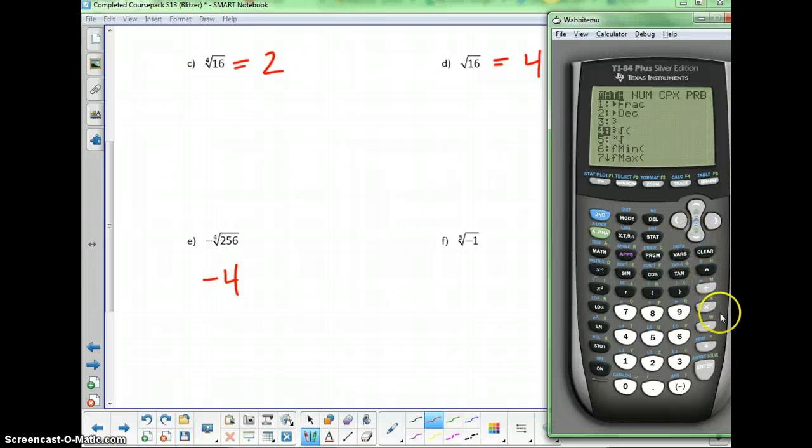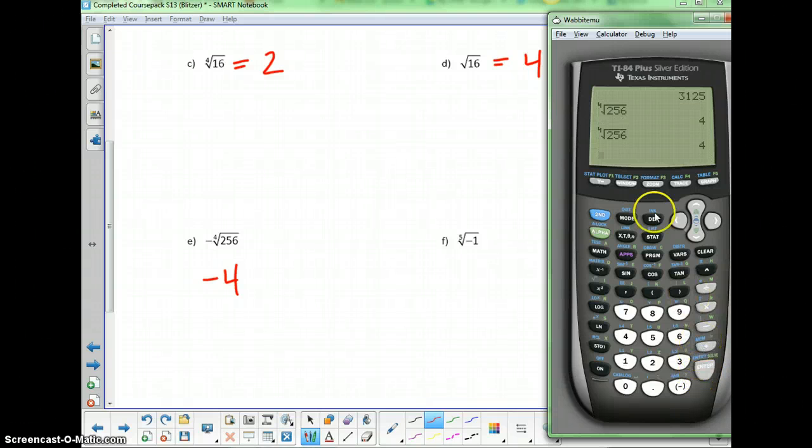Go down to that xth root, hit enter, and you can see the 4 popped up right there of the 256. That would be the correct order of typing it. Type the 4 first, then go in for that fourth root. So you can get it that way.